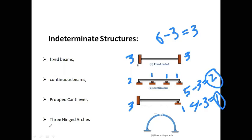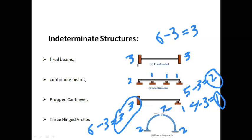A three-hinged arch has a hinge at one support, another hinge at the other support, and a hinge at the crown. The number of internal reactions at each support is two, giving a total of six, but including the internal hinge condition: six minus three equals three. So this structure is also internally indeterminate to a degree of three.